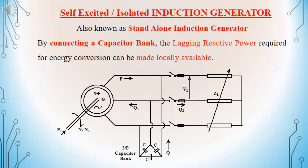Now we discuss the second type of induction generator, that is self-excited or isolated induction generator. It is also known as standalone induction generator. Here the lagging reactive power will be supplied by a capacitor bank that is connected to the induction generator. The diagram is shown in this slide, and we can see there is a parallel capacitor bank connected which will be supplying the lagging reactive power. The isolated induction generator will be supplying a local load.